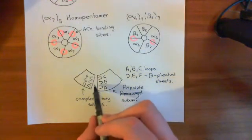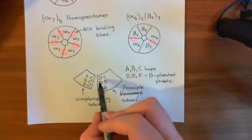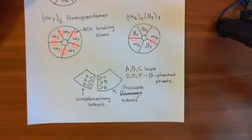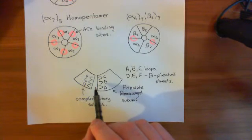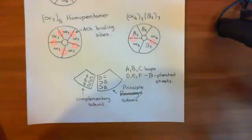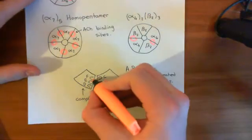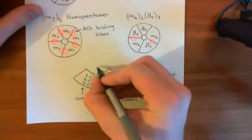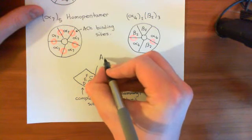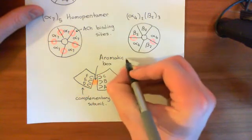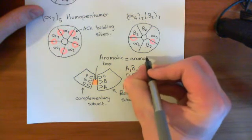The acetylcholine will come into this cavity and bind with functional groups exposed on the walls of the cavity, which are parts of these A, B, C, D, E, F loops. What sort of residues are going to allow the binding of acetylcholine here? Well, there is a portion of this cavity where the acetylcholine actually binds, known as the aromatic box, or also often referred to as the aromatic nest.